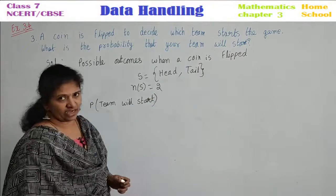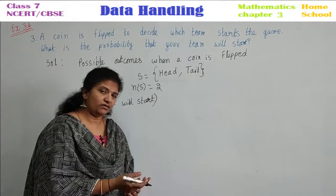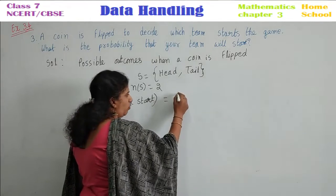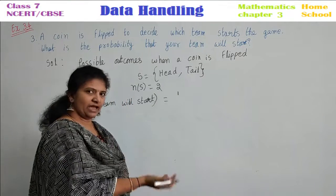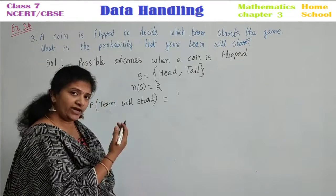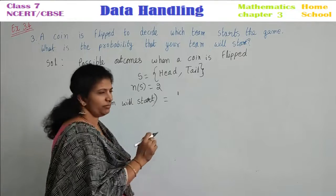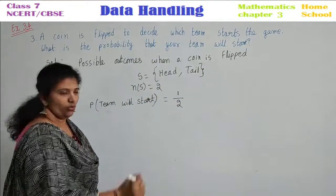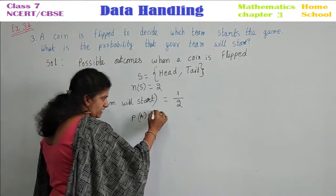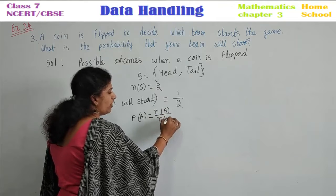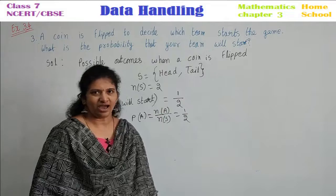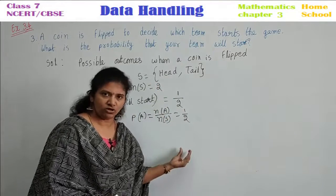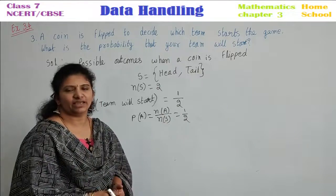What is the probability that your team will start? The team will be starting — either you may get head or tail. If you get head, one team will start; if you get tail, another team will start. Your favorable outcome is one, out of total outcomes two. Probability of an event equals number of favorable outcomes by total number of outcomes equals one by two. Probability of getting head is one by two, probability of getting tail is also one by two. So the probability of starting the game equals one by two.